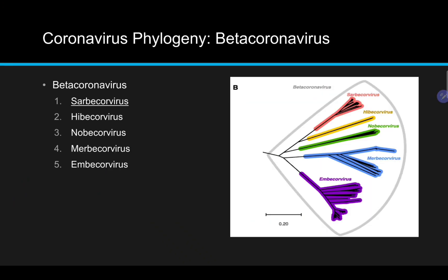The beta coronavirus group was further split into five monophyletic subgenera: Sarbecovirus, Hebecovirus, Nobecovirus, Merbecovirus, and Embecovirus. In the future, I might use only the prefix instead of saying the entire subgenera. It is also important to note that the Sarbe group is where COVID belongs.